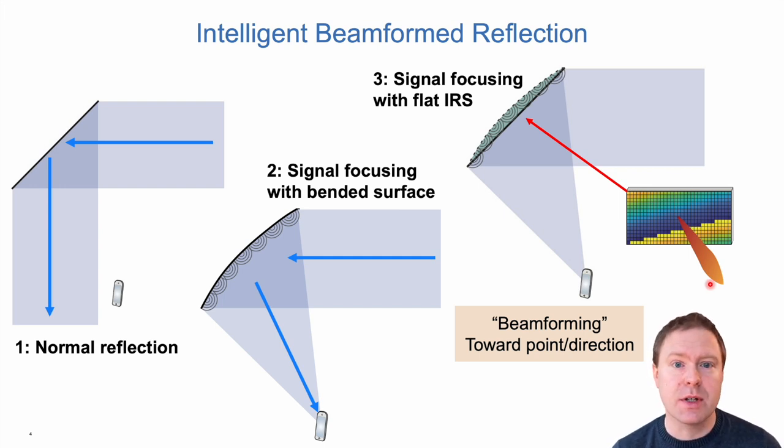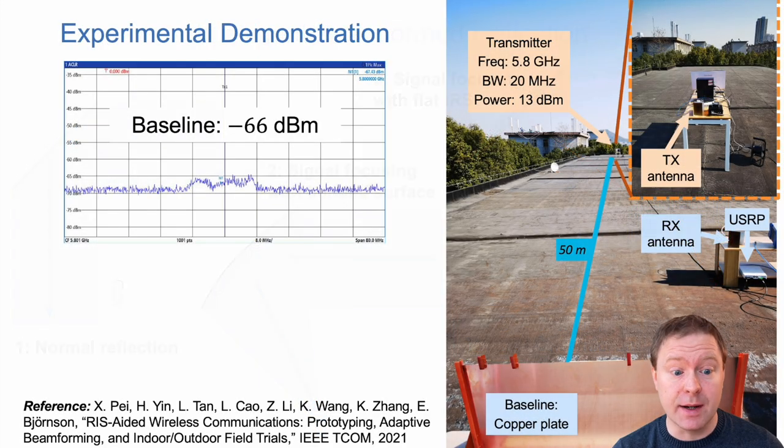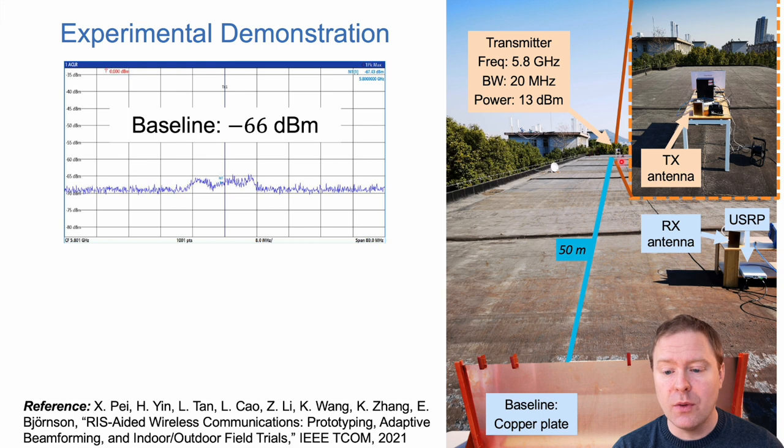So this is a general concept and we can actually build these kind of things. Here is an example of that. Over here we have a transmitter with a horn antenna that is very directive. Here we have a baseline copper plate that is 50 meters away and then we have a receiver here.